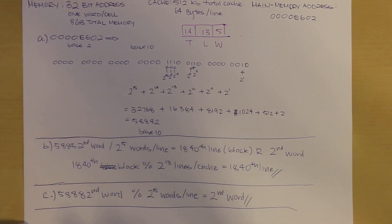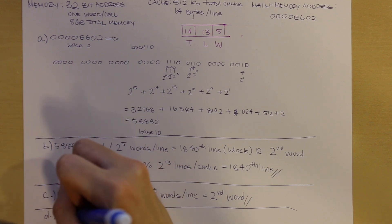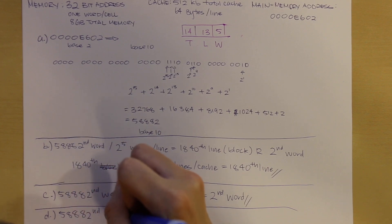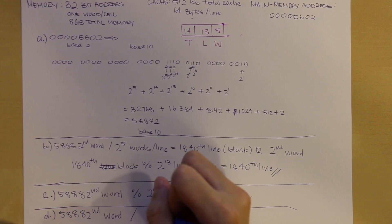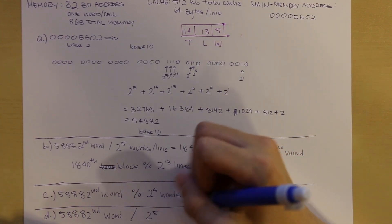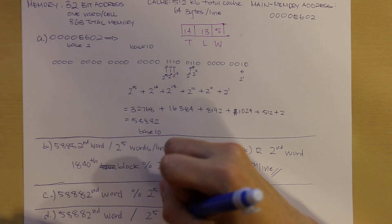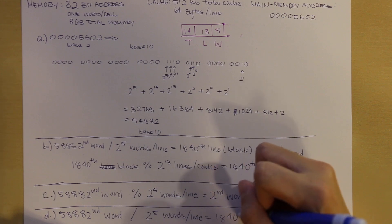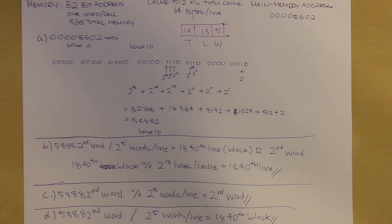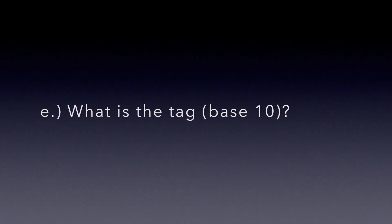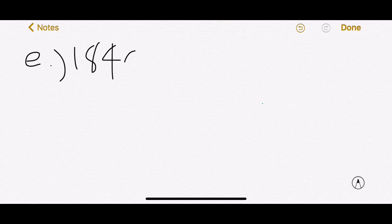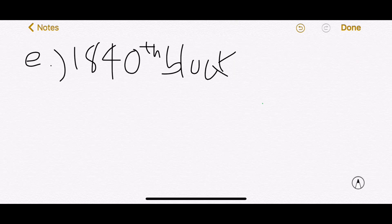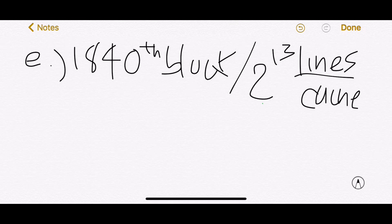To find which block it is in, we take our 58,882nd word and divide by the words per line — 2^5 words per line — which gives us the 1,840th block. To find the tag in base 10, we take the 1,840th block and divide by the lines per cache (2^13), which gives us a tag of zero.